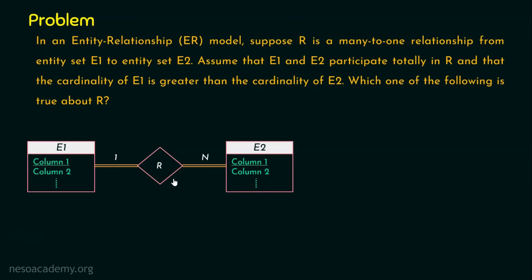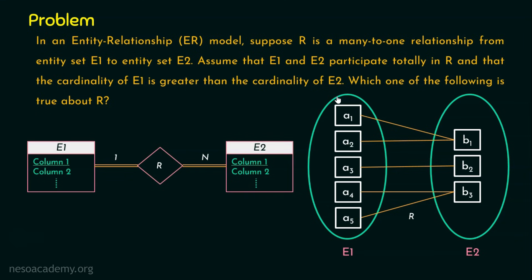E2 is also participating totally in the relationship R, and that's why we use double lines — double lines with the relationship meaning total participation. We know there are two types of participation: total participation and partial participation. In this case, every entity in E1 and every entity in E2 is participating in this relationship R. And one more key information is that the cardinality of E1 is greater than the cardinality of E2.